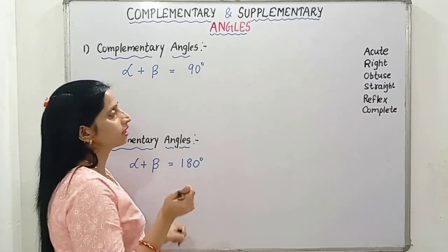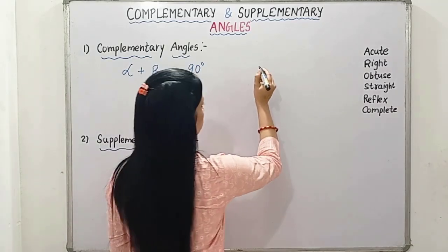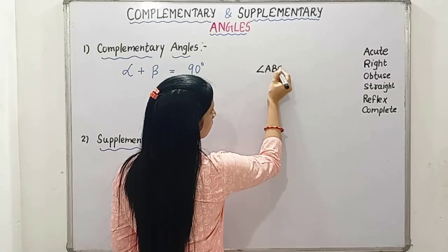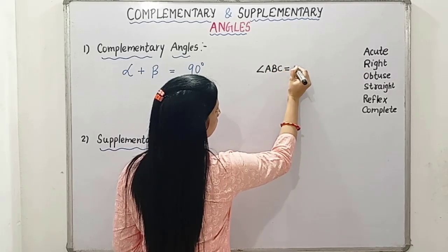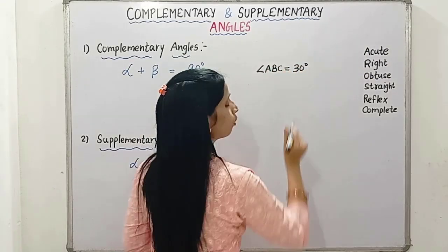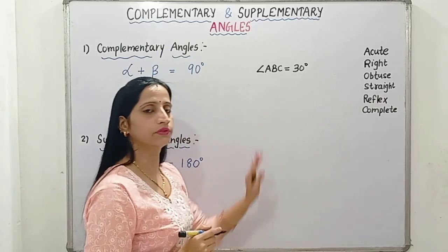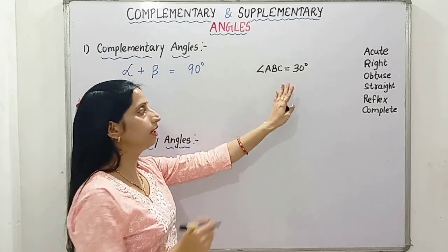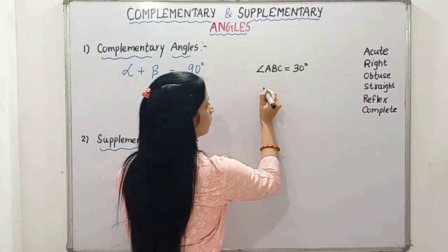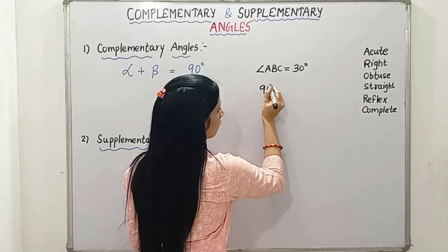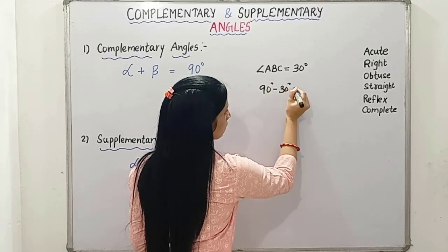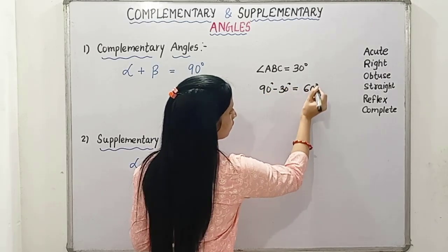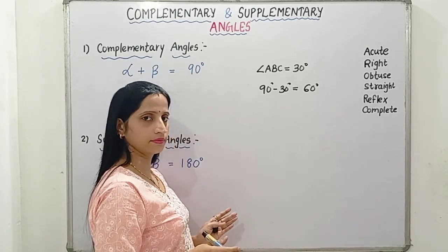For example, there is a question: angle ABC is 30 degrees. Then find the complementary angle of this. So it will be 90 degrees minus 30 degrees, that is 60 degrees. The complementary angle of this will be 60 degrees.